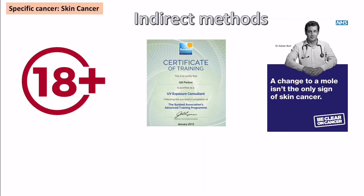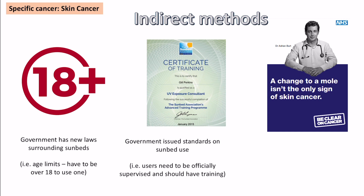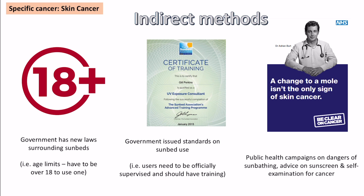Indirect methods for skin cancer include new legislation surrounding sunbed use: you cannot use a sunbed if you're under 18, and tanning salons must have official supervision with trained staff, preventing people from using a sunbed for excessive periods. Campaigns are also used to tell people about the dangers of sunbathing, how to cover up, and how to self-assess symptoms before seeing a doctor.